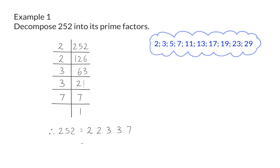This can be written in exponential form as 2 squared times 3 squared times 7. Let's have a look at how we can use these prime factors in bigger calculations.